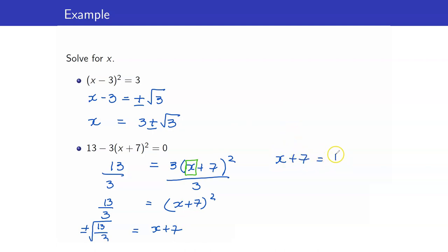x plus 7 is equal to, let me just rationalize that. This is square root of 13 over square root of 3 times square root of 3 both numerator and denominator. So that's plus or minus square root of 39 over 3.